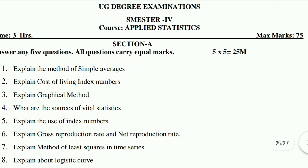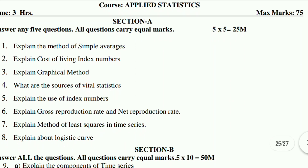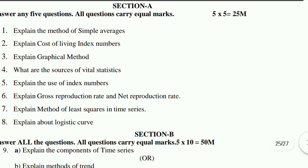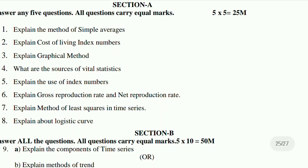Short questions: First, explain the methods of simple average. Second, explain cost of living index. Third, explain the graphical method. Fourth, what are the sources of vital statistics? Fifth, explain the use of index numbers. Sixth, explain gross reproduction rate and net reproduction rate. Seventh, explain the method of least squares in time series. Eighth, explain about logistic curve.